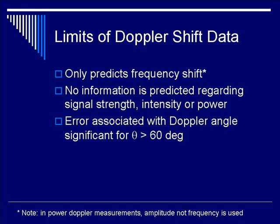The limits of the Doppler shift are as follows: it only predicts the frequency shift, there is no information on signal strength, intensity, or power, and there is significant error associated if you measure Doppler signals above 60 degrees.